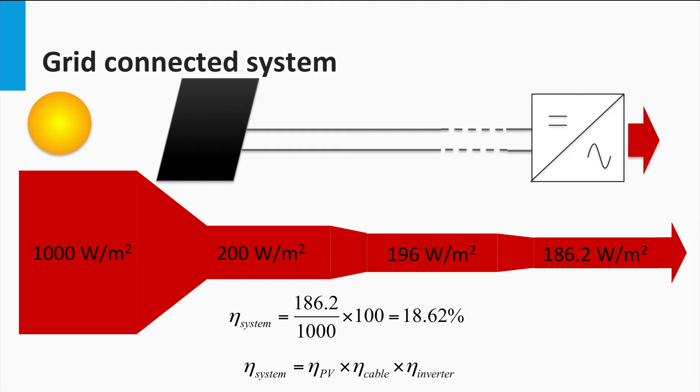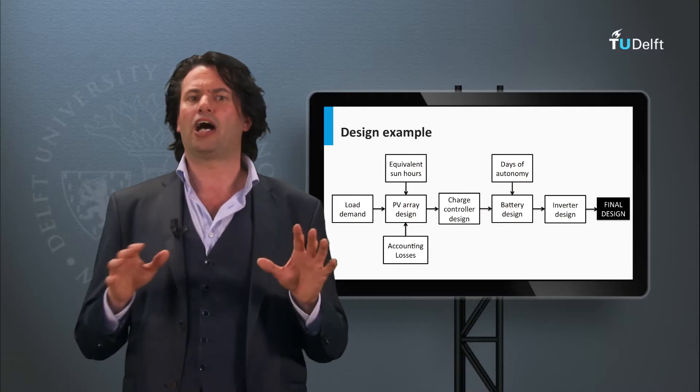It can also be said that the overall system efficiency is calculated as the product of the various component efficiencies. That is η_system equals η_PV times η_cable times η_inverter.